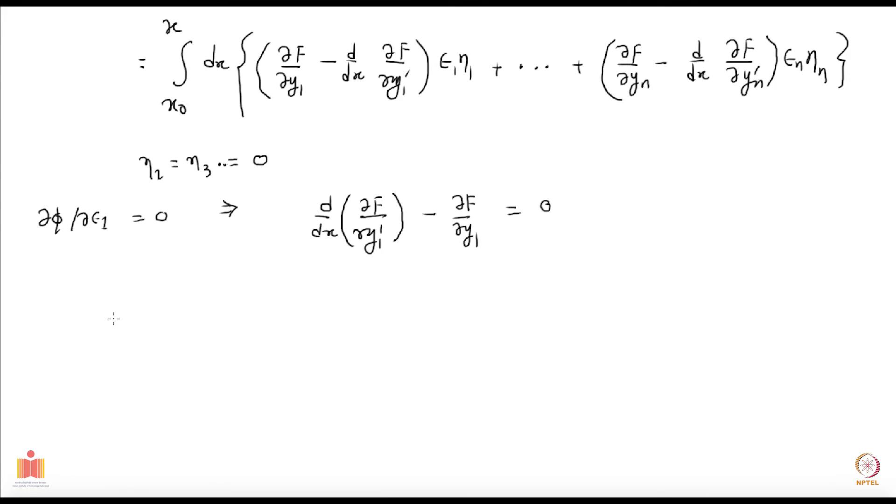Similarly, you can put eta 2 to be non vanishing and all other etas to be 0 and again you can find delta phi over delta epsilon 2 and you will conclude the same thing. Continuing that way you get a set of equations for each variable. You will get this, these are your Euler-Lagrange equations.